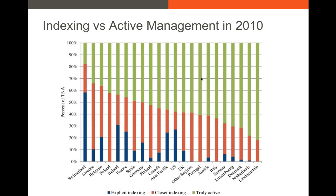The green indicates truly active management. In the US in 2010, just over 40% of all managers are doing some form of indexing — either explicit or implicit — with tracking error very low relative to a benchmark index.